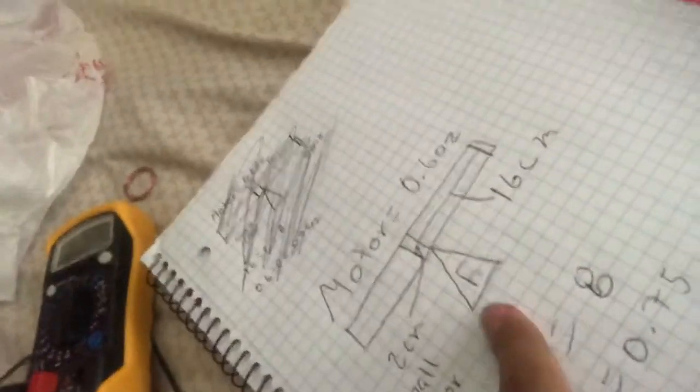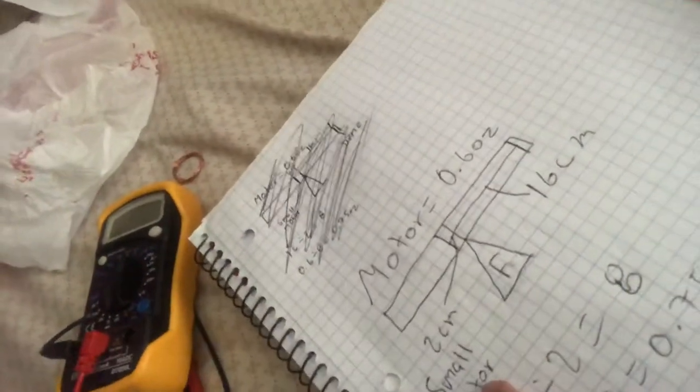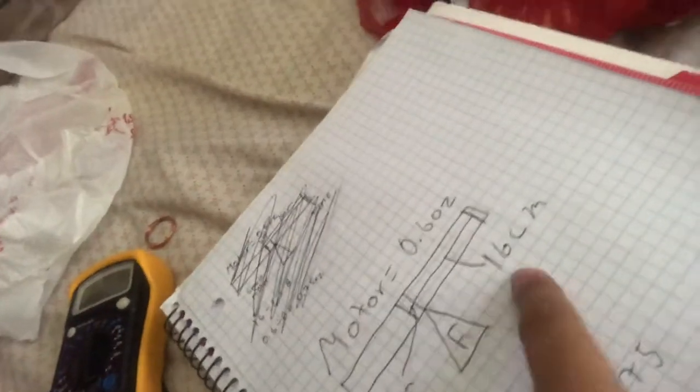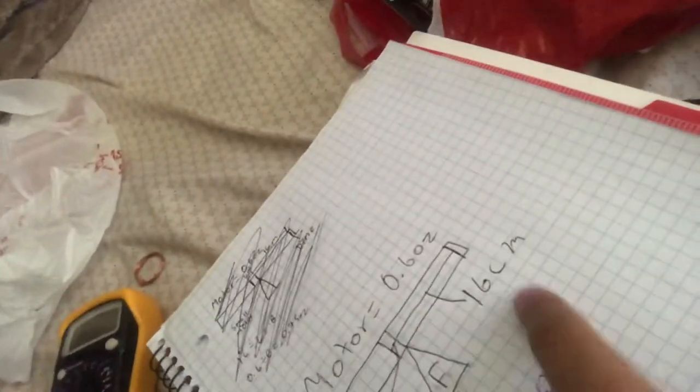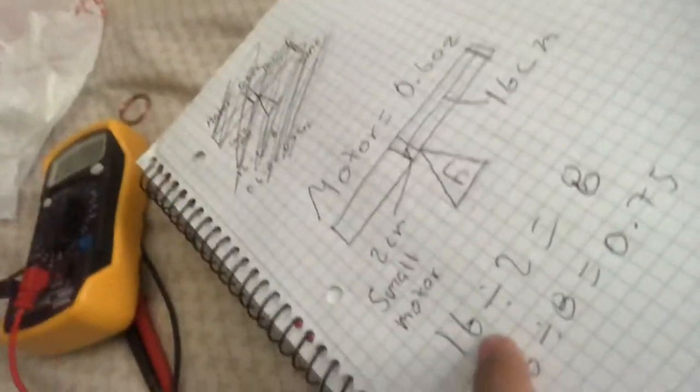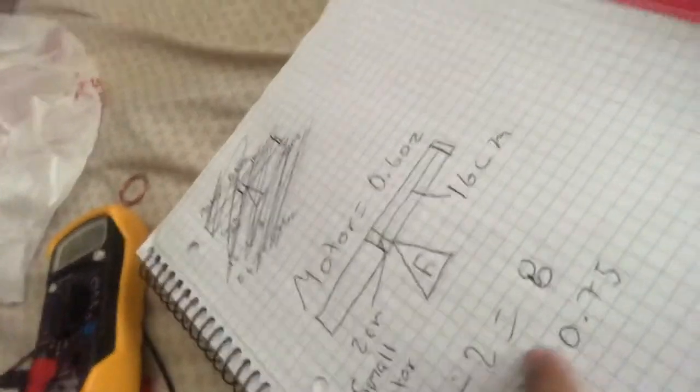Here we go. You see you have two centimeters from the fulcrum to the small motor, and then 16 centimeters from the fulcrum to the dime. Now you divide the 16 centimeters by two and you get eight.